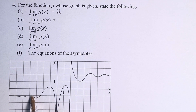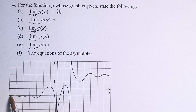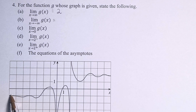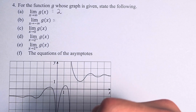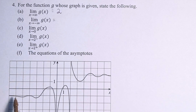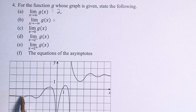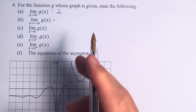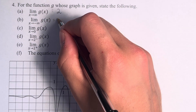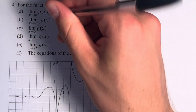Similarly, for the limit as x approaches negative infinity of g of x, the function is hovering around this point here, increasing and decreasing, but getting smaller and smaller in the actual changes, approaching this value, which is y equals negative 1.